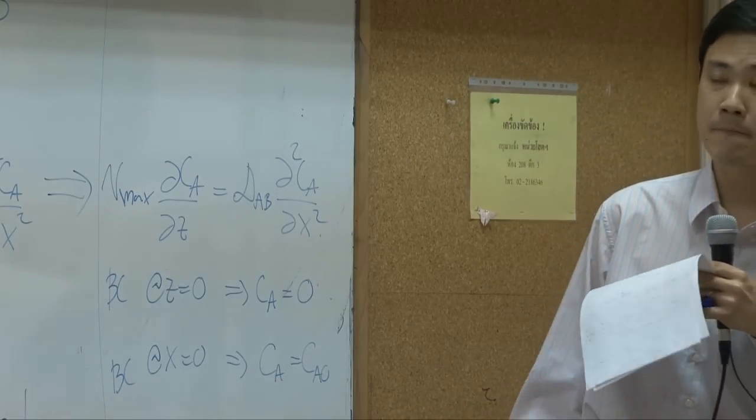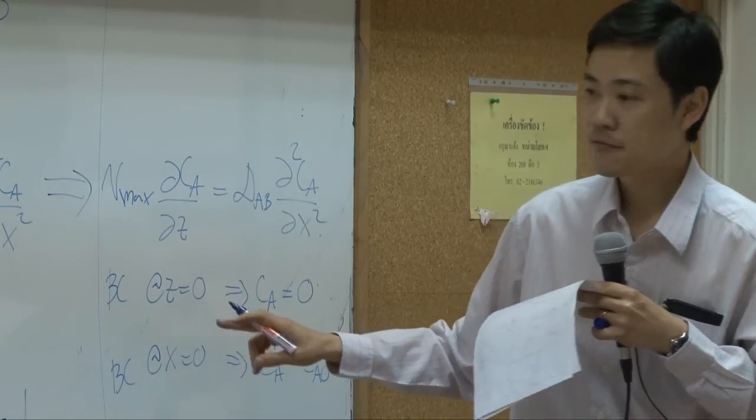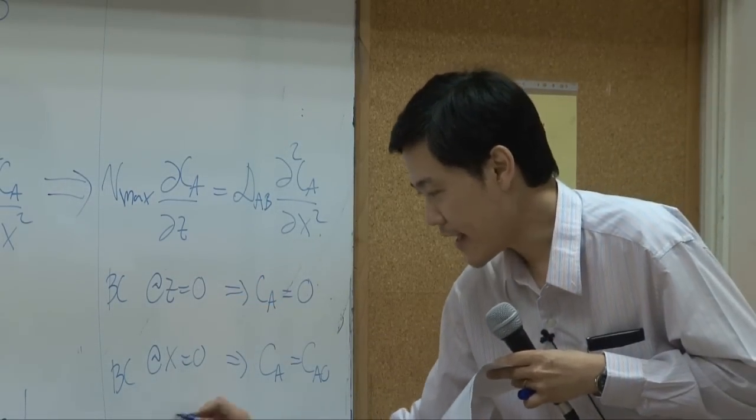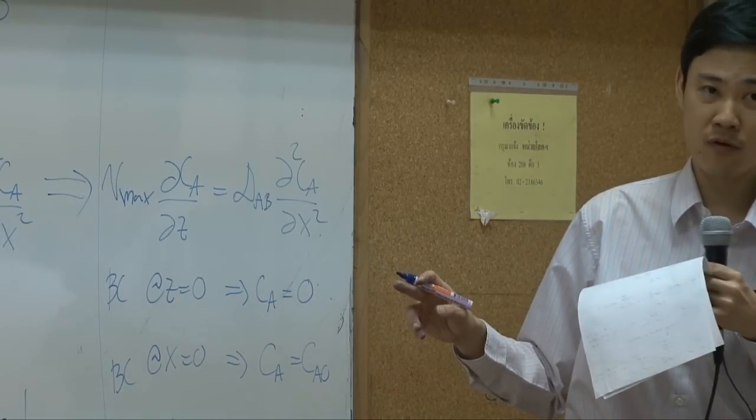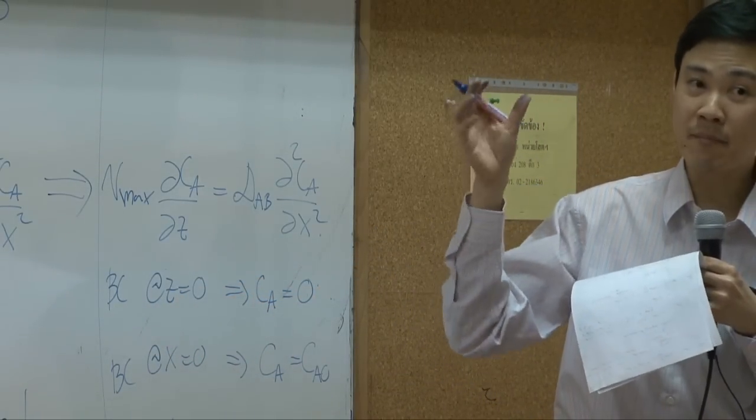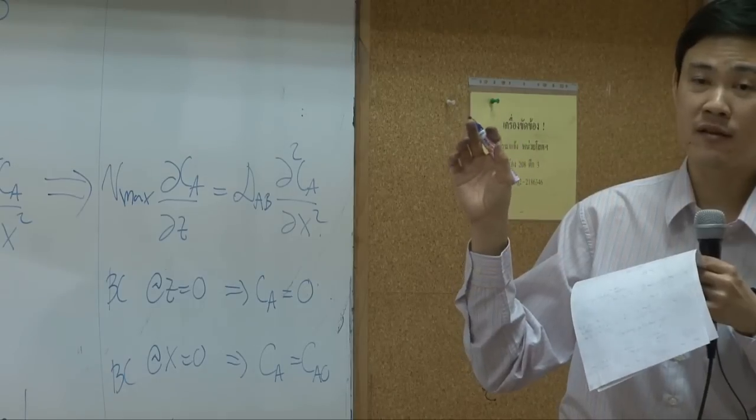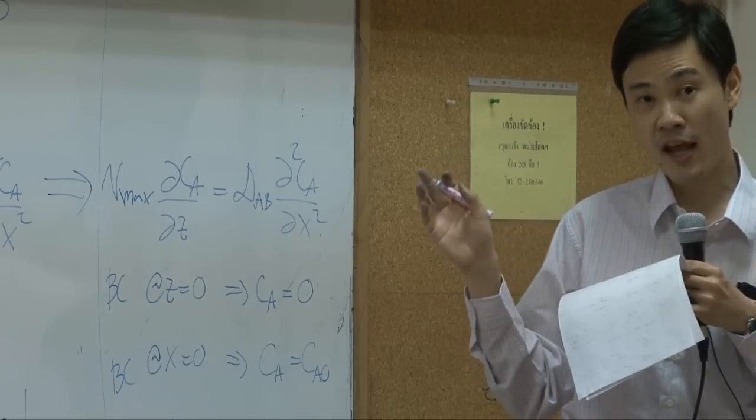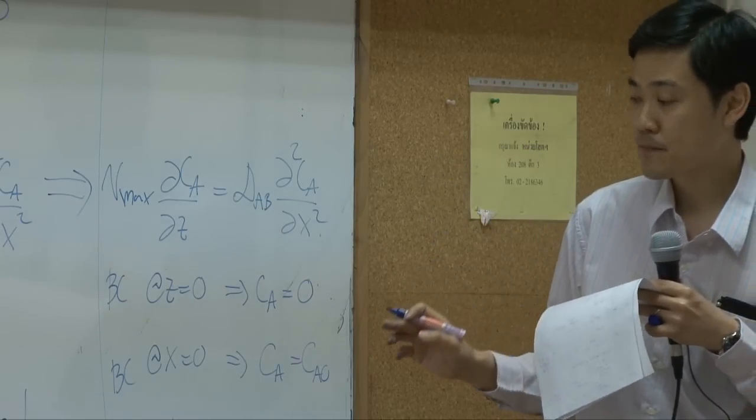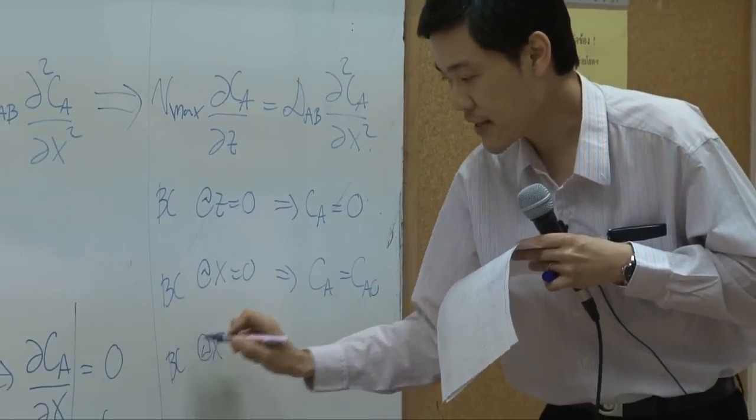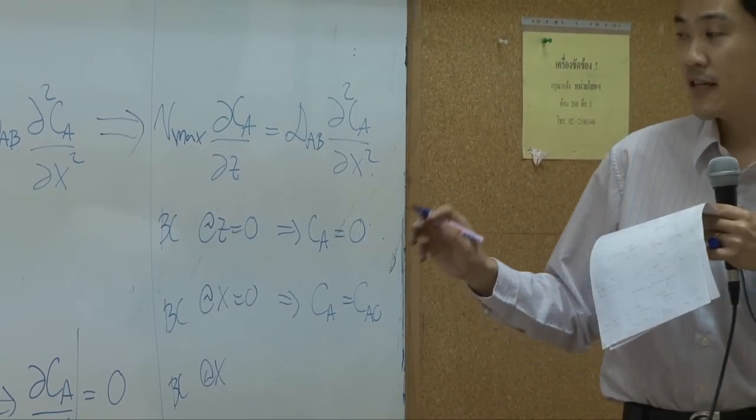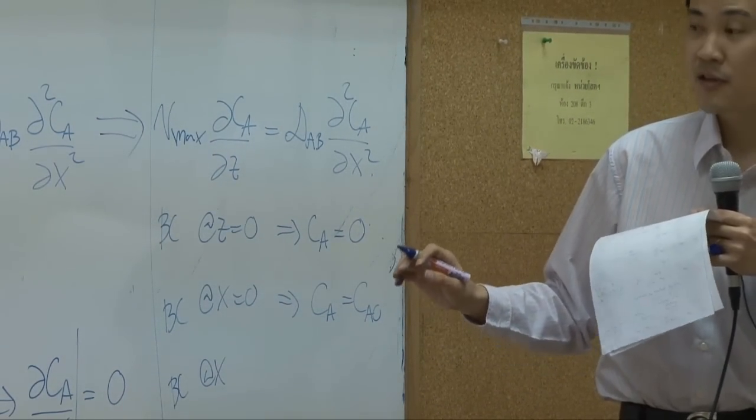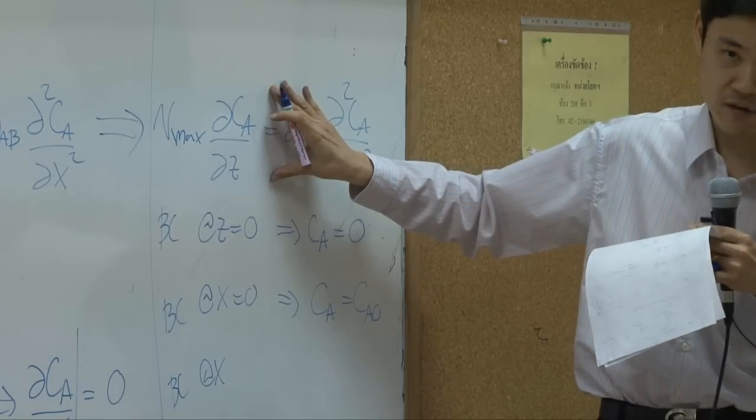But now at x equal to delta may not be the same anymore, because we did something at x equal to delta that makes the velocity profile change. So in the text they proposed a new boundary condition. This boundary condition was used so that this equation can be solved.